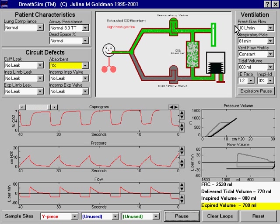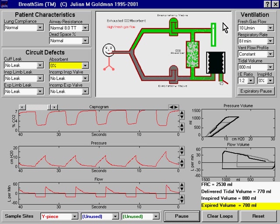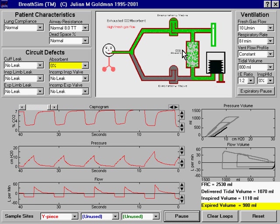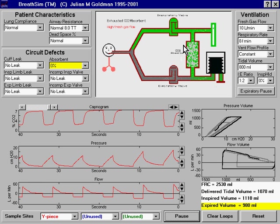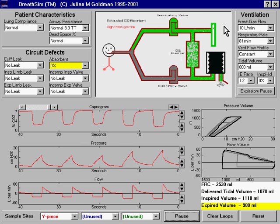As before, every inspired breath is comprised of both fresh gas flow that comes from the common gas outlet, as well as previously exhaled gas that is pushed by the ventilator bellows through the CO2 absorber towards the inspiratory valve. However,